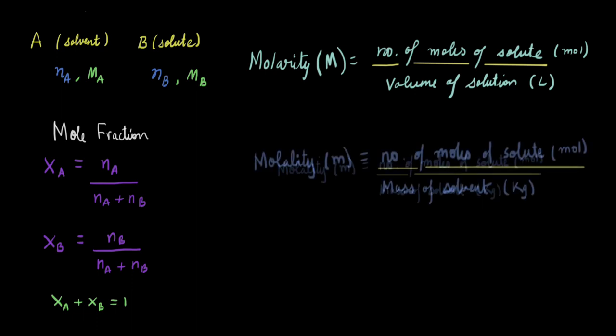Next, we have a very similar-sounding term called molality, denoted by a small m. Molality is defined as the number of moles of solute divided by the mass of solvent in kg. So in the case of molarity, we use the volume of the solution in liters, while for molality it is the mass of the solvent specified in kg. This unit is something we need to keep in mind — the mass used must be in kg, just as the volume must be in liters.